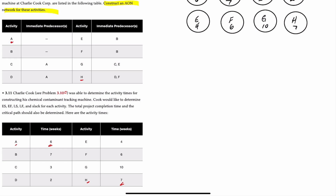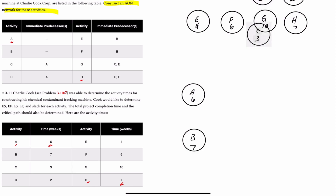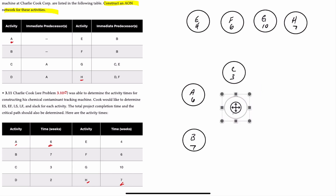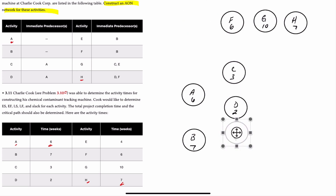Both A and B do not have any predecessors, so both of those are our beginning nodes. Activities C and D both succeed activity A, so we'll put activity C here and activity D here. Activities E and F are immediately preceded by B, so we'll place E and F accordingly.